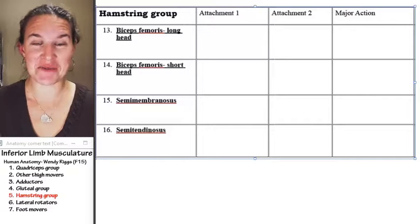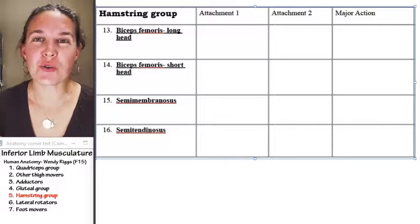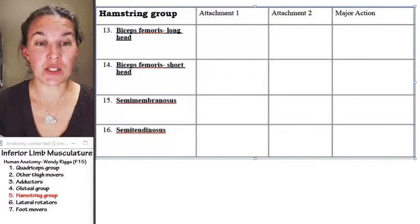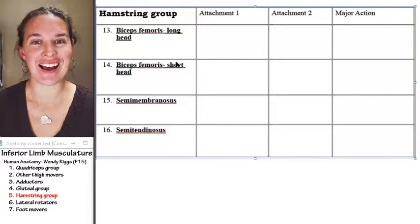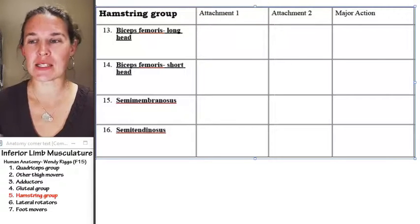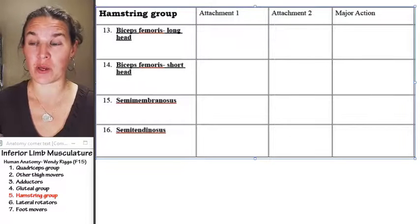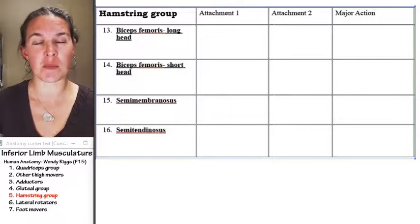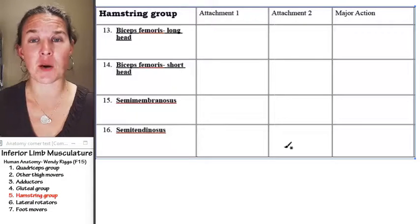All right. Hamstring group. The hamstring group is found in the posterior compartment of your thigh, and there are a couple of things that make this group a group, a couple of ways that we can think about them or sort them to help us organize.